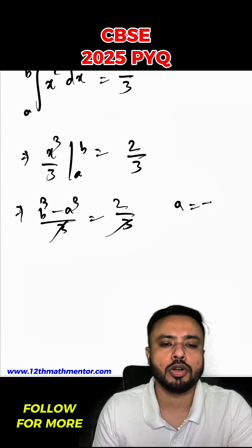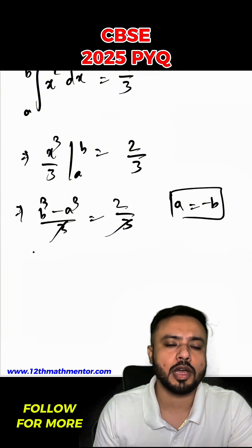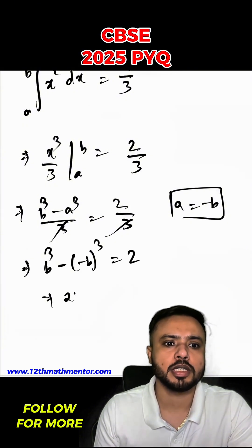Above I have got a equal to negative b. I am going to substitute this value here. So b³ minus of minus b³ will be equal to 2. Hence, I can say that 2b³ equal to 2. Hence, b will be equal to 1.